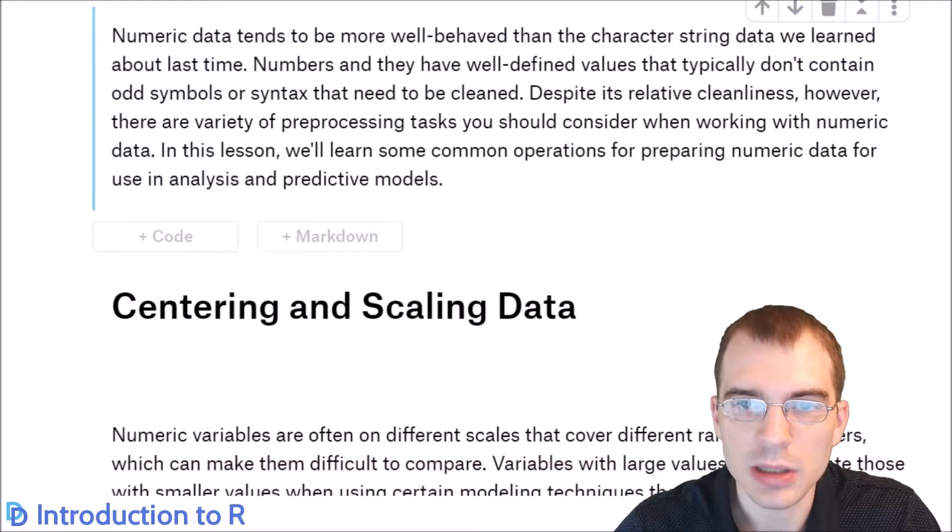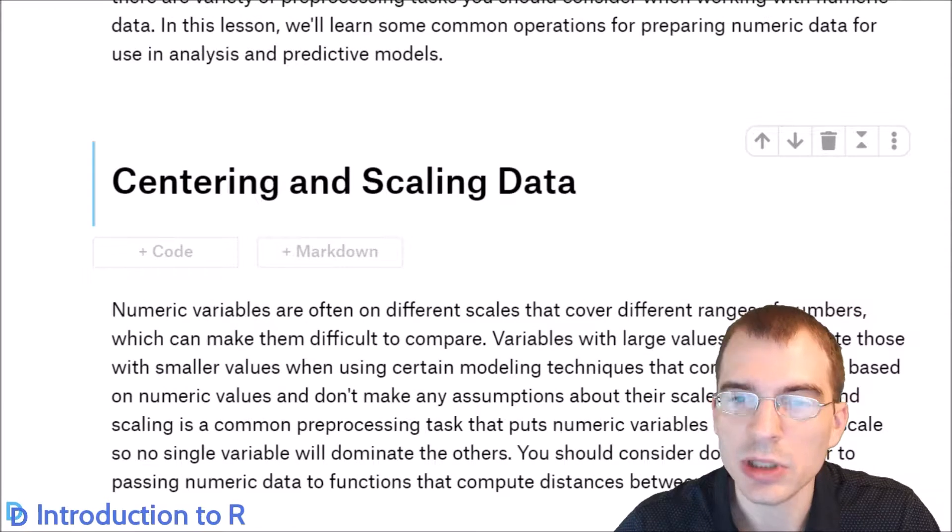One thing that is common to do with numeric data before you use it is centering and scaling the data. This is also known as data normalization because the intent is putting each different variable on the same numeric scale so that a variable with numbers in the range of ten thousands is on the same scale as one with numbers in the millions.